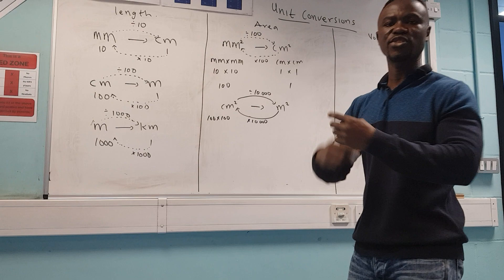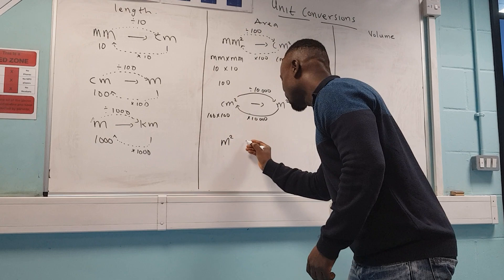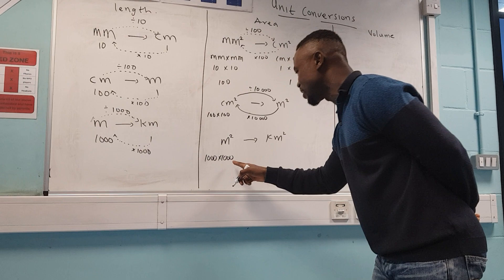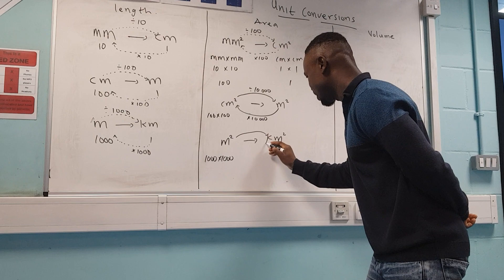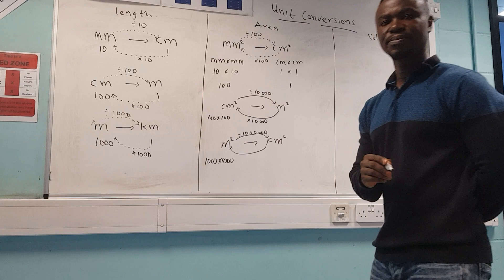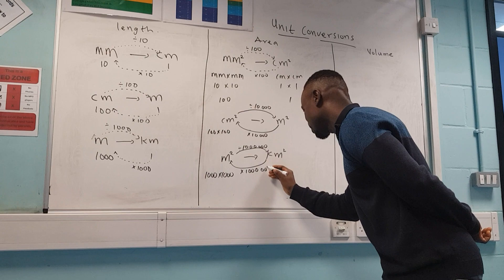For meters squared to kilometers squared, it's a thousand times a thousand. How many zeros do you see? Six. So moving from meters squared to kilometers squared you divide by one million — six zeros — and moving from kilometers squared to meters squared you multiply by one million. That is your conversion for area.